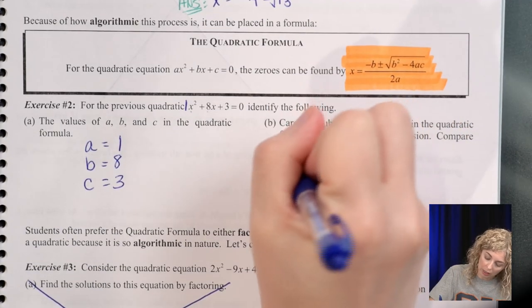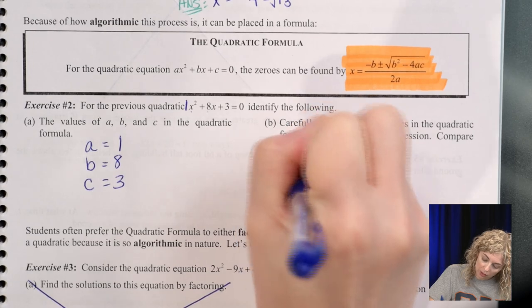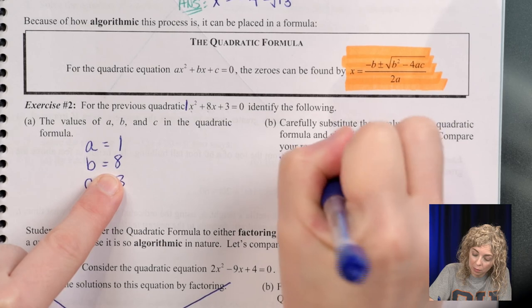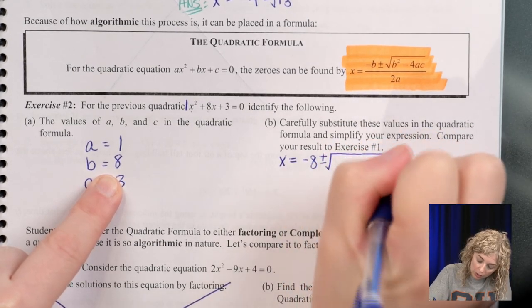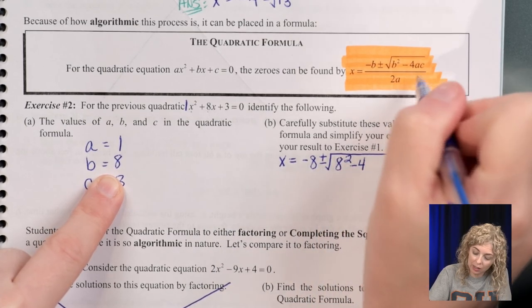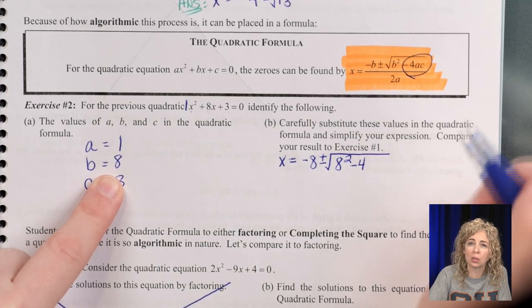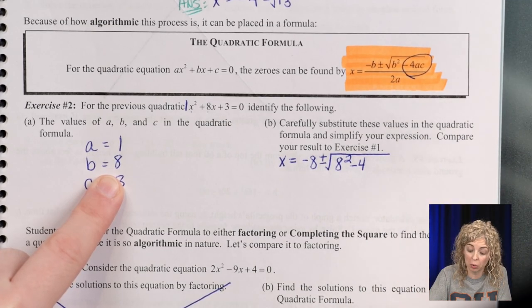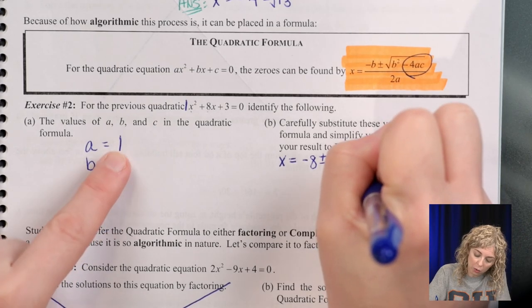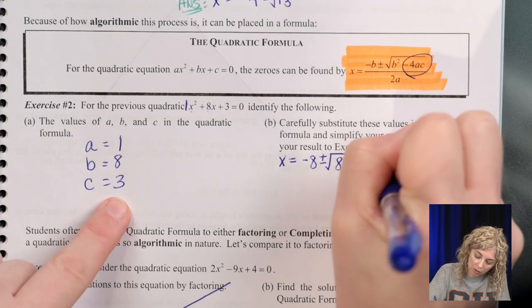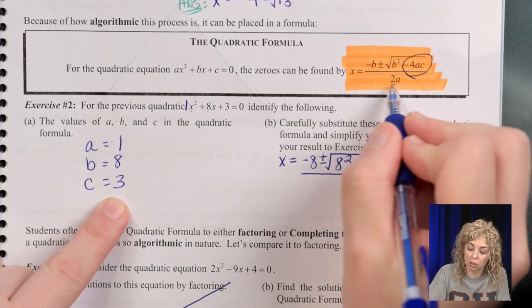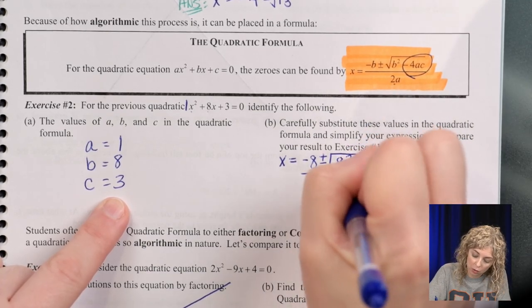Okay, so it's going to be x equals negative b, and b is 8, plus or minus the square root of b squared minus 4ac. Now that 4ac, since there's no symbols in between the letters and the numbers, that means product or multiplication. So it's 4 times a times c. So 4 times 1 times 3 all over 2a. And that's 2 times a. So it'd be 2 times 1.